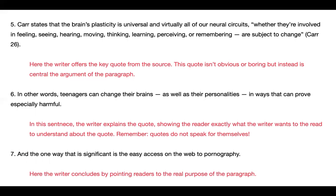And then paragraph sentence seven: 'And the one way that is significant is the easy access on the web to pornography.' Here the writer concludes by pointing readers to the real purpose of the paragraph. This last concluding sentence doesn't just restate what the paragraph says. It tells us: what's this whole paragraph's point? Why does it matter? Why should I care? Because it's all about how easy access to pornography can really hurt teenagers' brains. And that goes to the next paragraph.